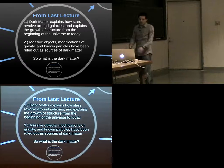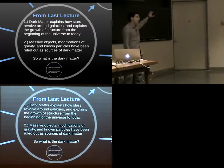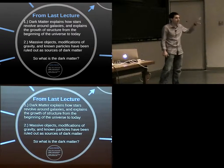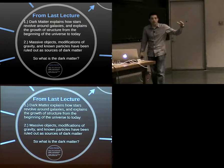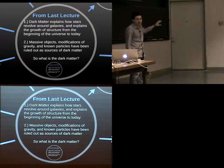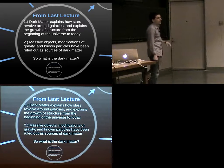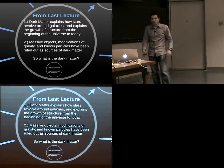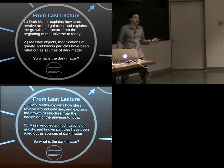We talked about how dark matter explains the growth of structure, and then we talked about things that can't be dark matter. We talked about massive objects like black holes and planets, how modifications of gravity don't work, and how known particles like neutrinos or protons and electrons don't explain dark matter. So what is the dark matter?